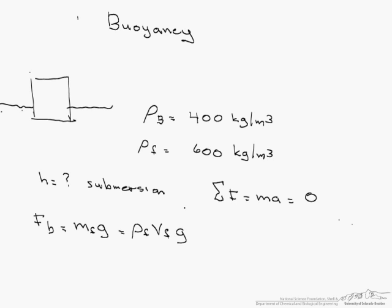So we can write this as the density of the fluid times the length and the width of the box times the amount that is displaced times gravity.